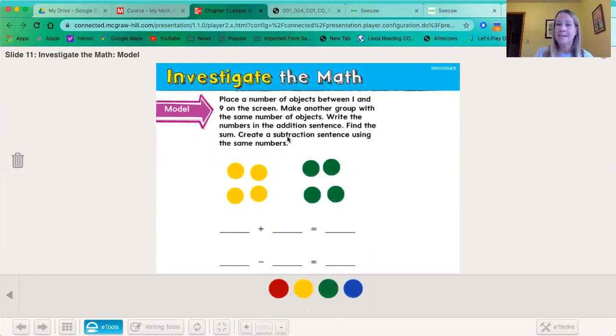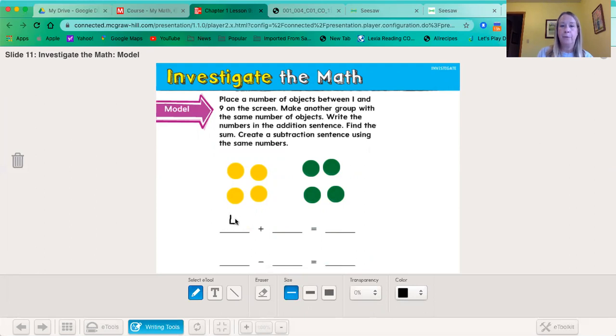Write the numbers in the addition sentence. Four plus four equals eight. Find the sum. Create a subtraction sentence using the same numbers. Well, subtraction sentence has to start with all of them, so we start with the big number. So that'd be eight minus four equals four.